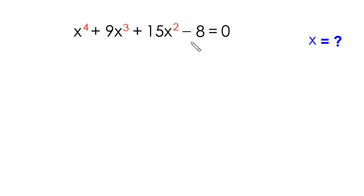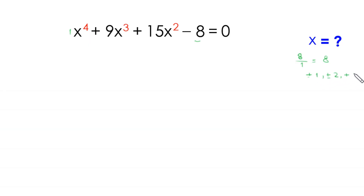If we divide this constant 8 by the coefficient of x to the power 4, which is 1, we get 8. And factors of 8 are plus minus 1, plus minus 2, plus minus 3 and plus minus 4. If we check 1, this is not a solution. If we check 2, this is not a solution. 3 is not a solution and 4 is not a solution.